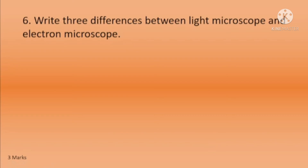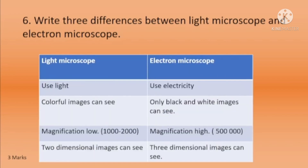Sixth question: write three differences between a light microscope and an electron microscope. Light microscope uses light — either bulb light or sunlight — while electron microscope uses electricity. Light microscope gives colorful images, but electron microscope gives only black and white images. Light microscope has low magnification, while electron microscope has high magnification. Light microscope gives two-dimensional images, whereas electron microscope gives three-dimensional images.